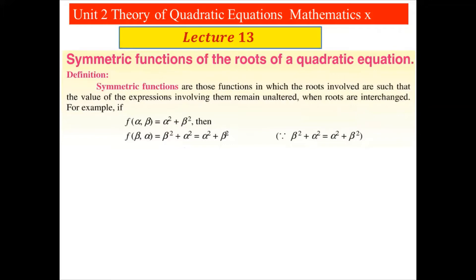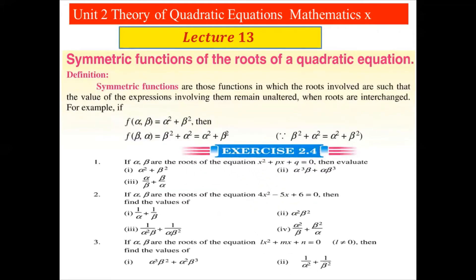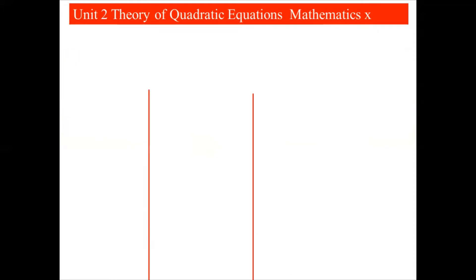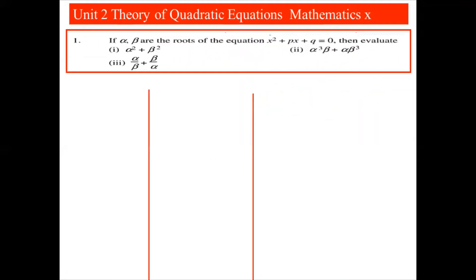Simply, when you want to check that a given function is a symmetric function, just interchange the values. When we replace alpha with beta and beta with alpha and the function is unaltered, we can say that this function is a symmetric function. So let's start Exercise 2.4, Question 1.